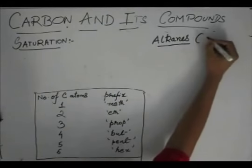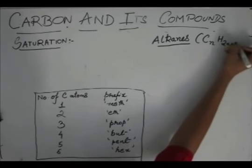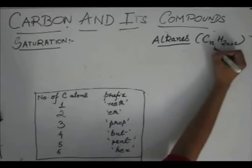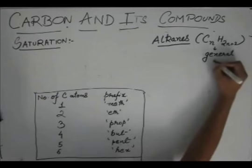We know now that the alkanes have a formula, general formula. This is called the general formula of alkanes, which is CnH2n plus 2.